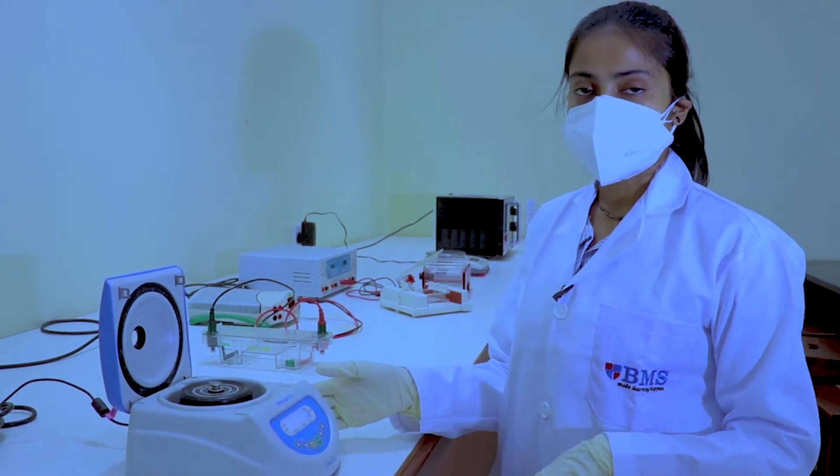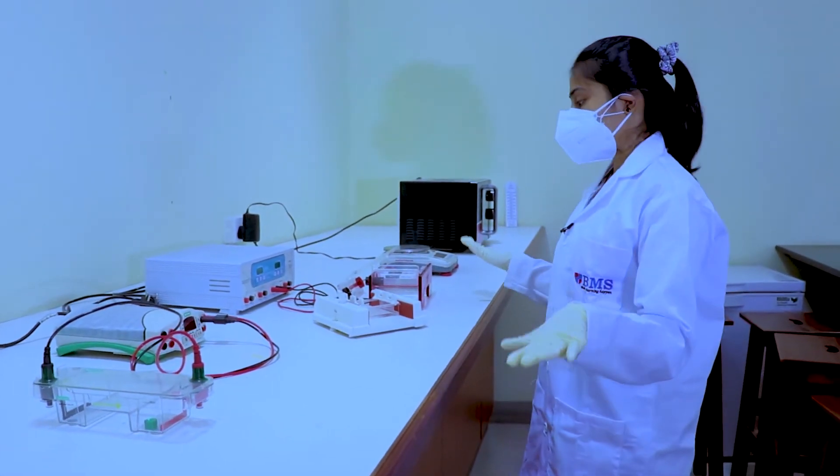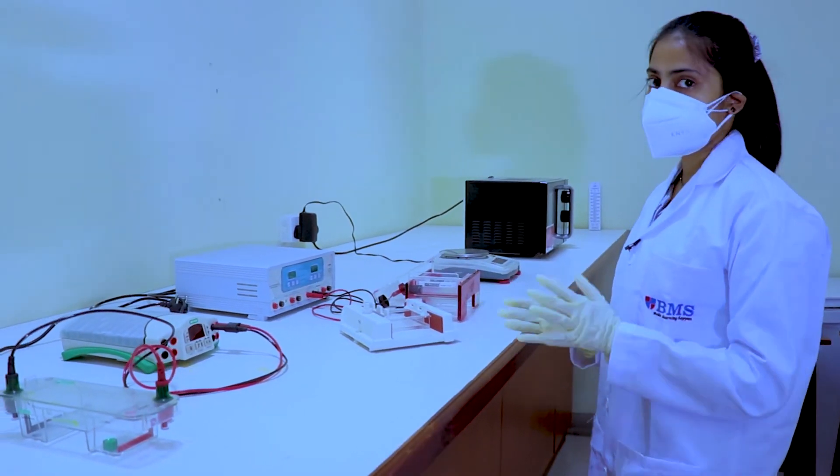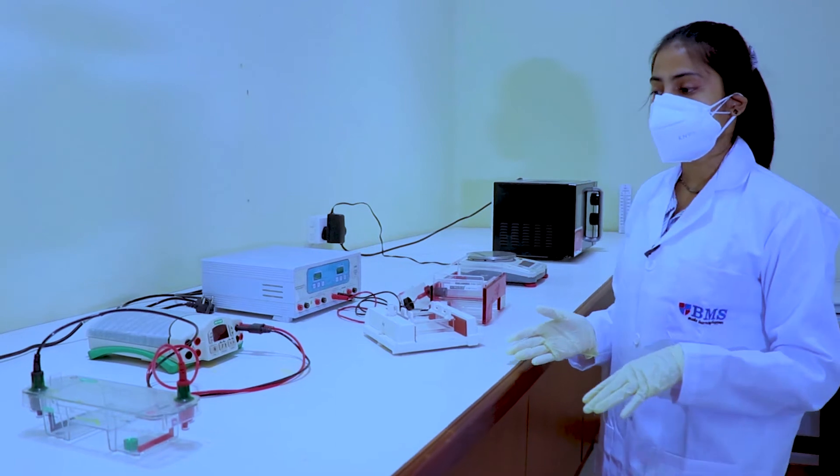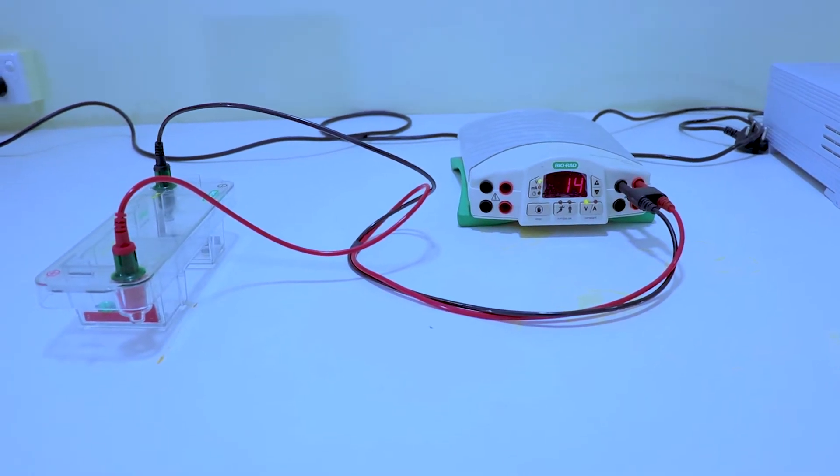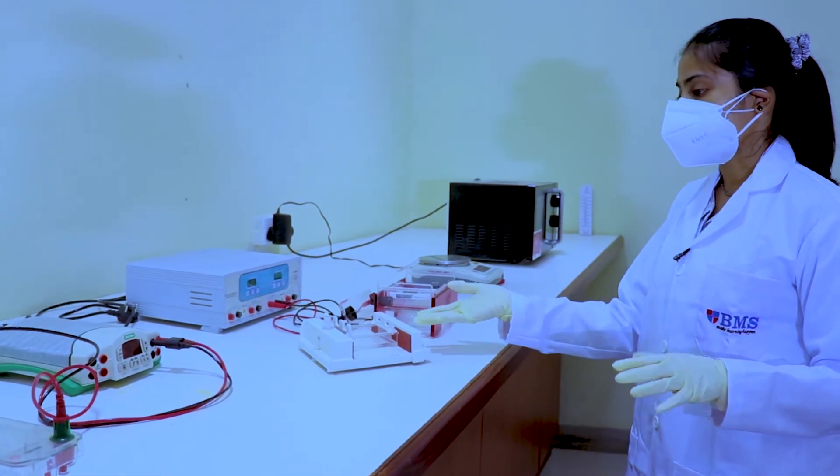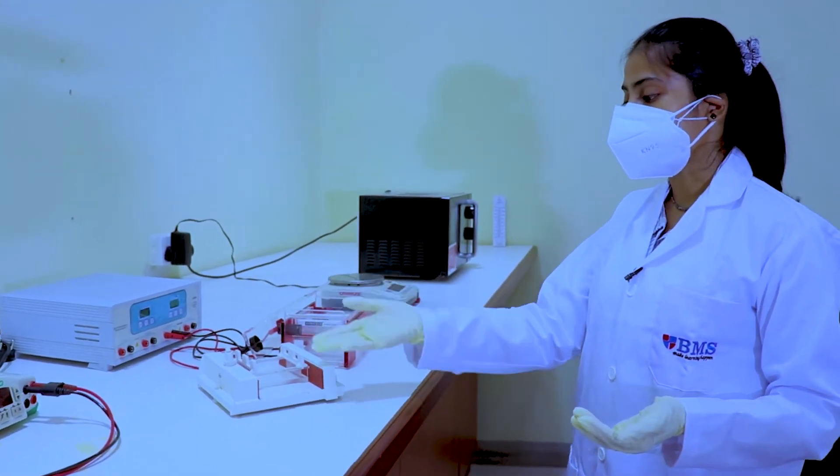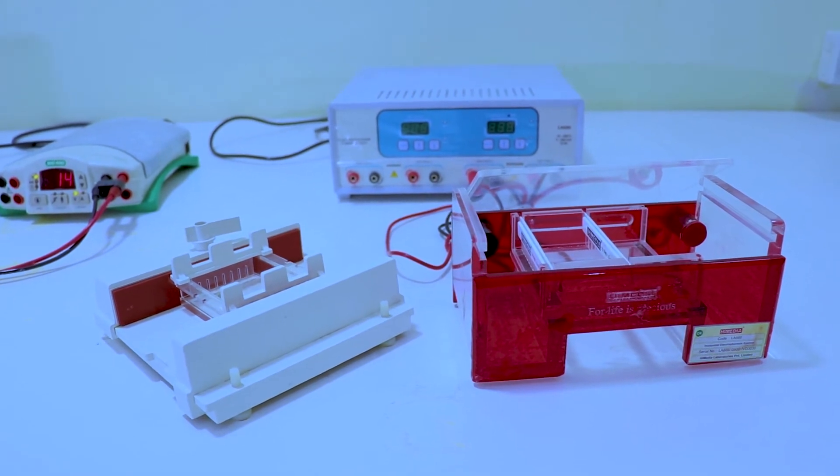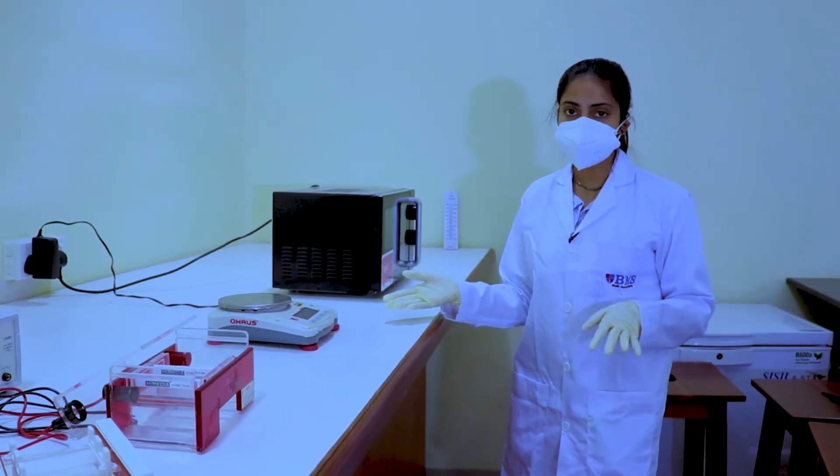Here we have the gel apparatus which is used for agarose electrophoresis. You can see here a small gel chamber and a bigger one with the necessary other equipment like combs and the gel tray. There are two power supplies as well.